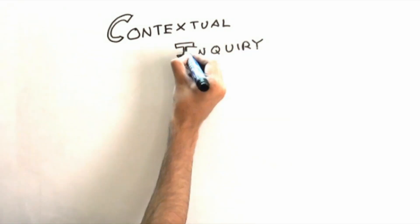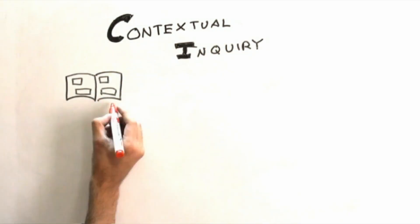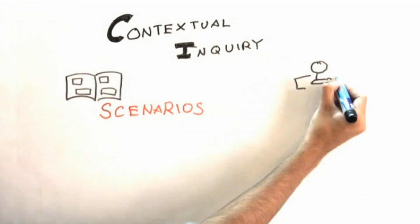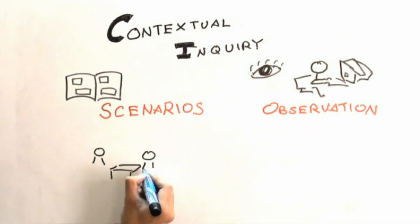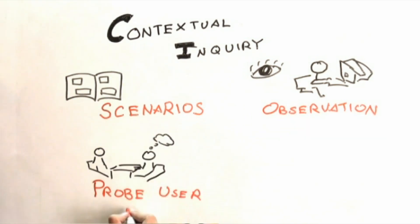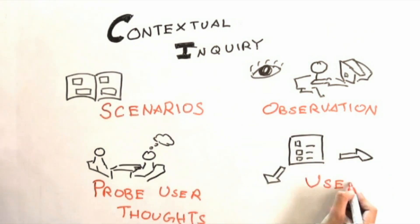Conducting a good contextual inquiry can be difficult at times. The user can be observed working at his workplace in a scenario. Observe his natural environment and activities, and probe his thoughts. You may also think of giving him a task to complete.